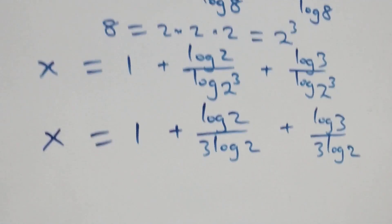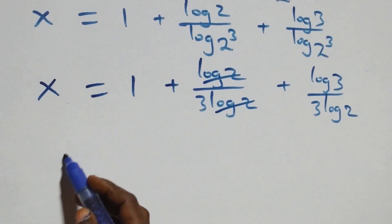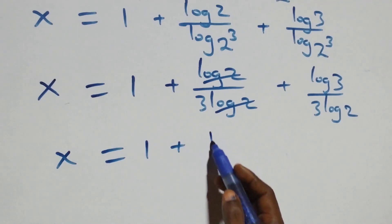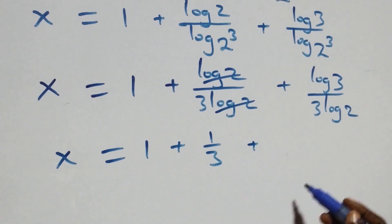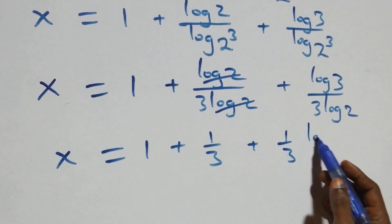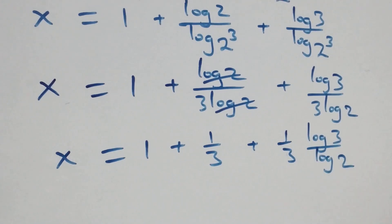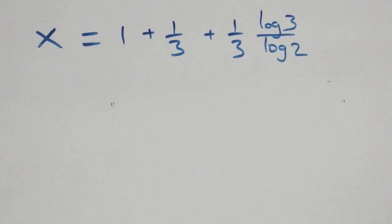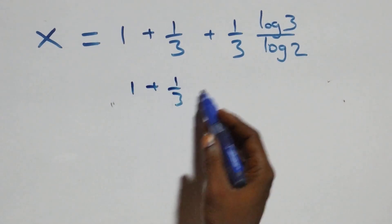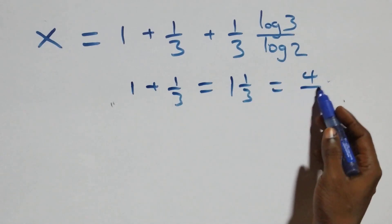From here, log 2 cancels each other in the first fraction, giving 1/3. This implies x = 1 + 1/3 + (1/3)·(log 3 over log 2). Then 1 + 1/3 is the same as 4/3.